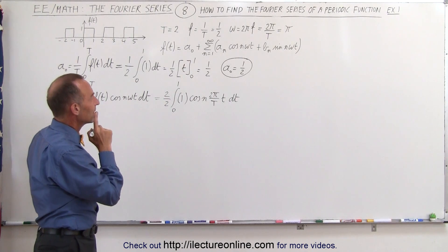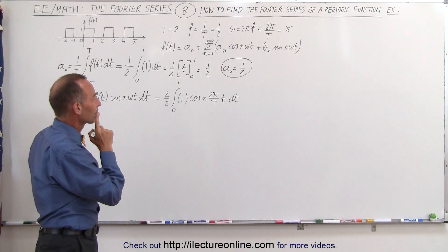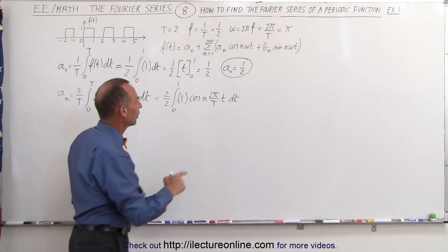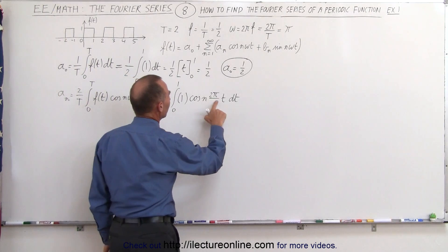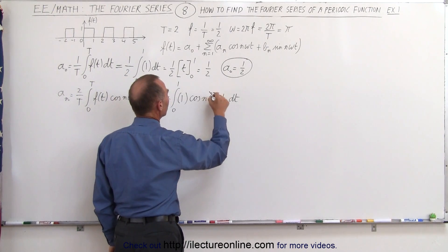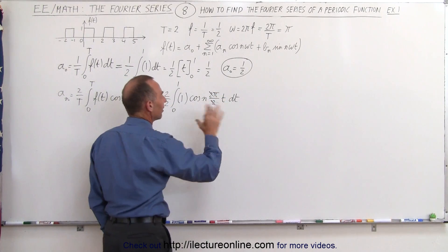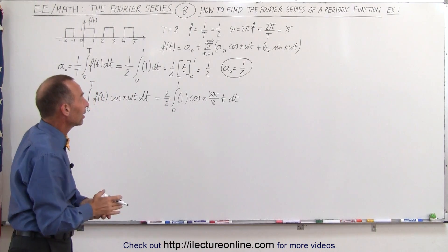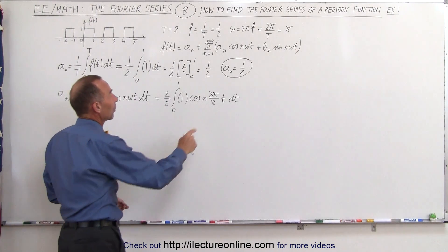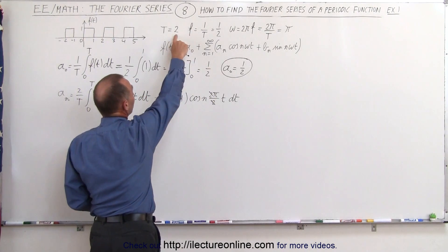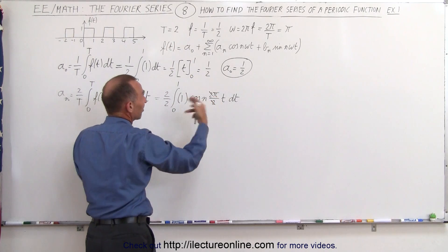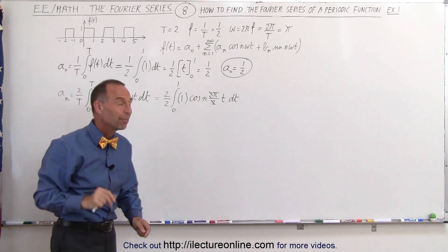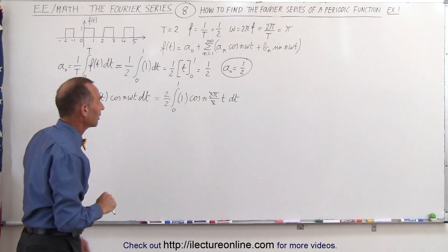We can simplify by setting T equal to 2, so the 2's cancel out. This gives us the cosine of n·π·t dt, which is probably easier to write.